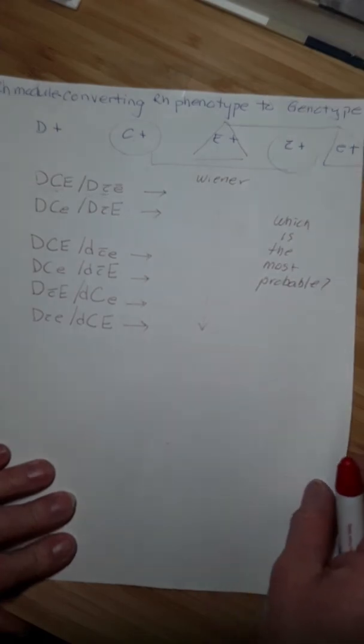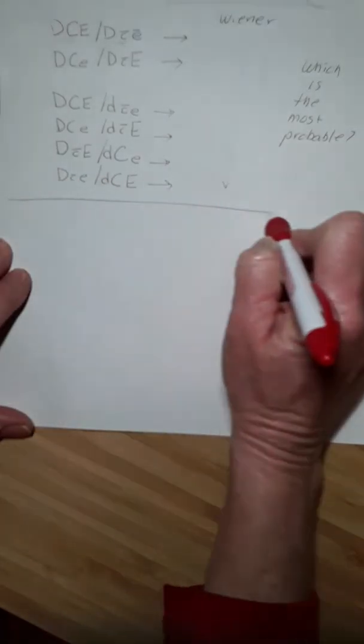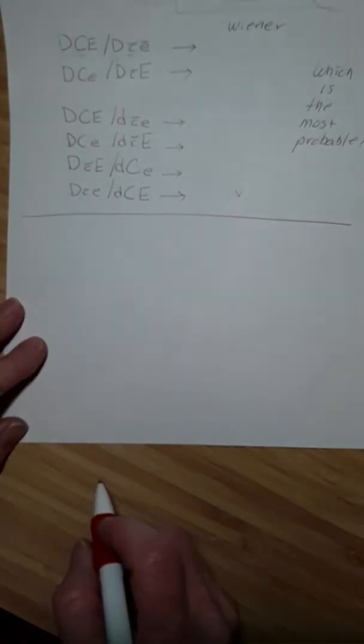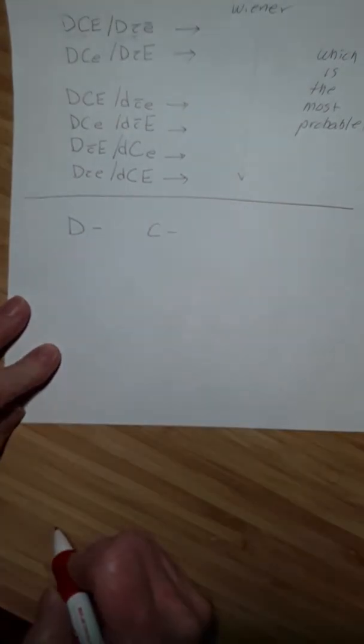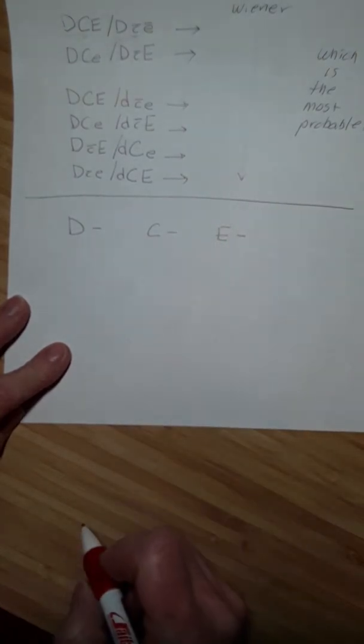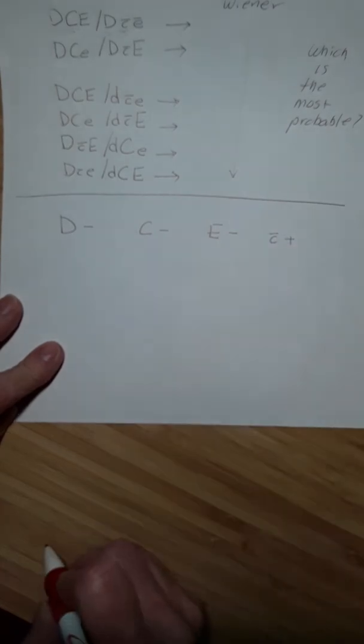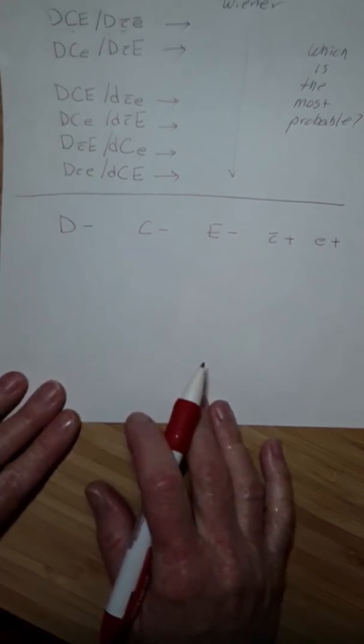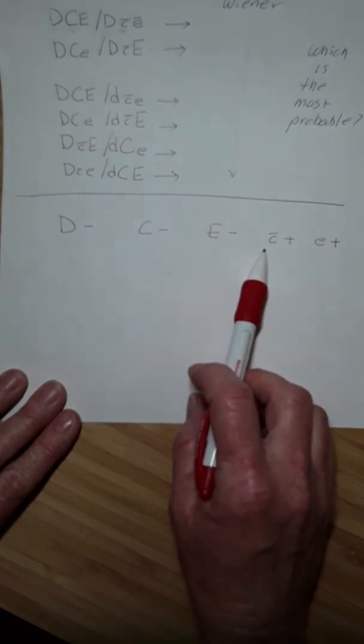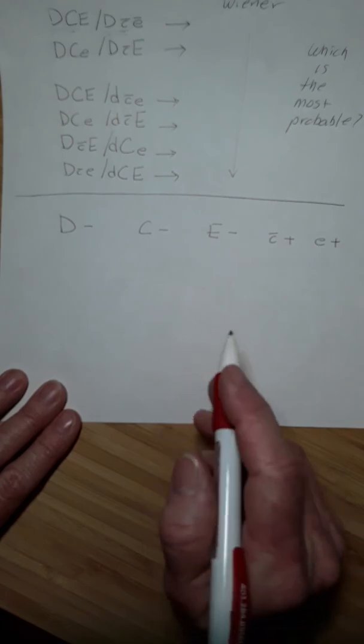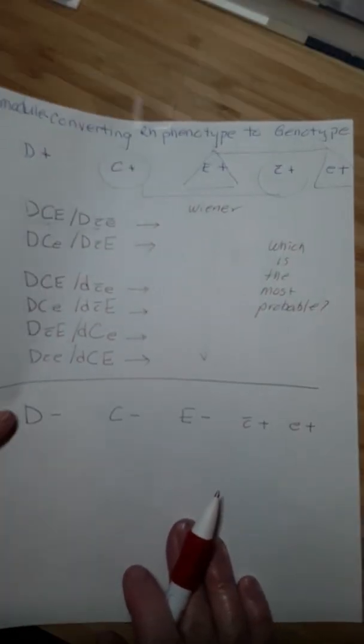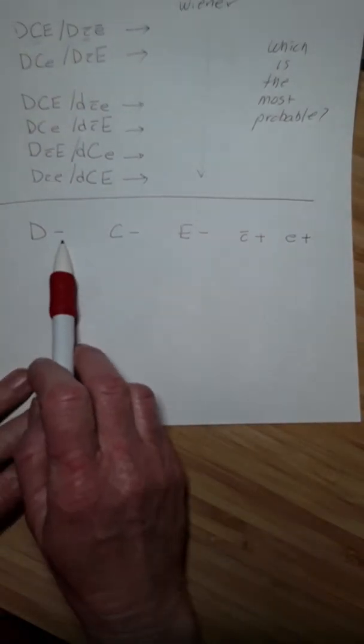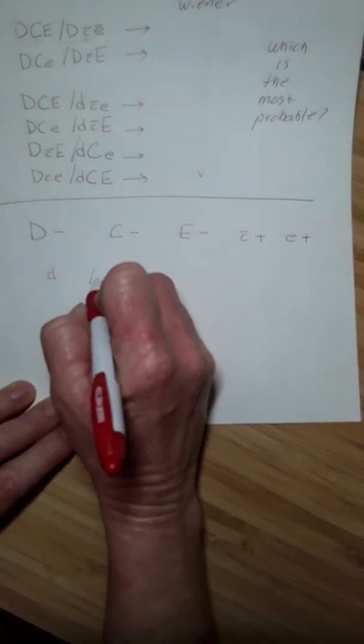Let's try one more, an easier one. Let's say that on the typing of the patient or donor cells, the D is negative, the big C is negative, the big E is negative, little c is positive, and little e is positive. Remember that big C and little c are alleles, and big E and little e are alleles, so you can't be negative for both. You can be positive for both, which we found in the previous example. We've got negative for D, so what we write down then is little d, little d, because the patient is big D negative - they did not inherit the big D from either parent.